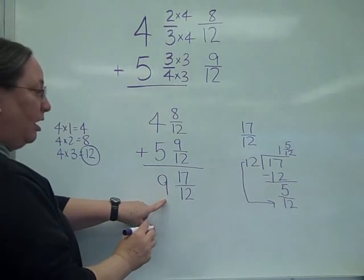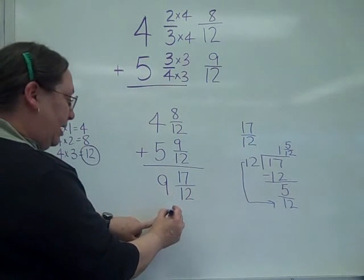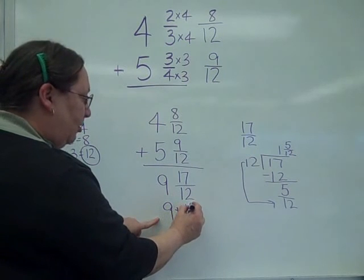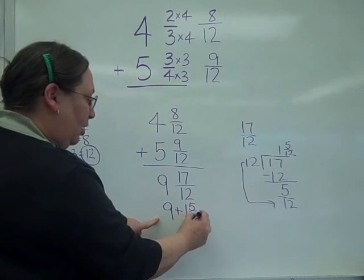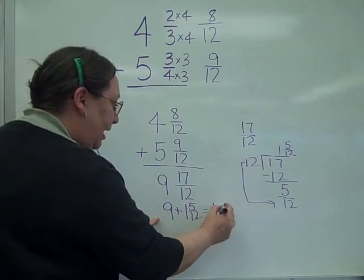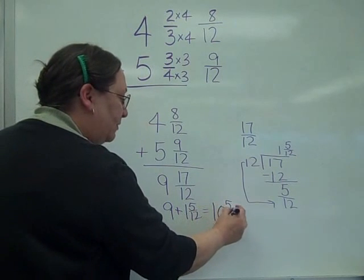And what am I going to do with the 9? This actually is 9 plus the 1 and 5 twelfths, which is then 10 and 5 twelfths.